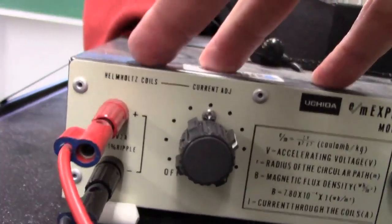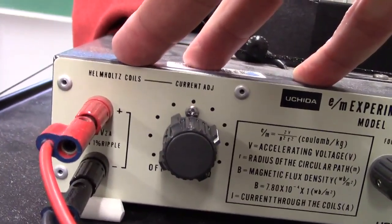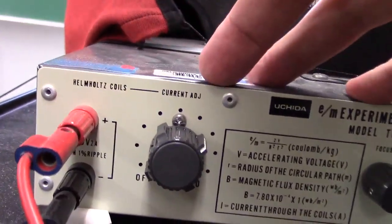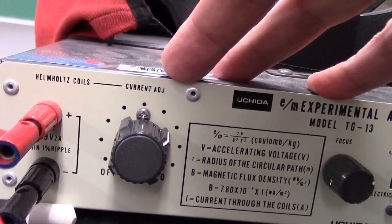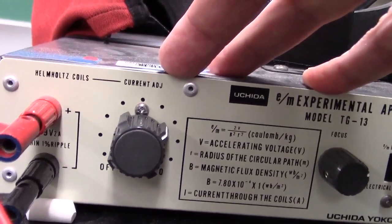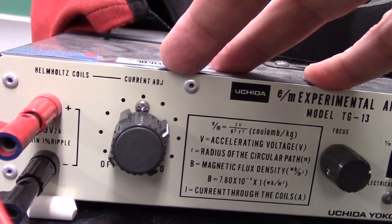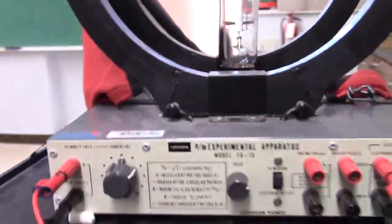On the other side of this apparatus, inputs for Helmholtz coils. I already talked a bit about that. And current adjust. That adjusts the electric current in those coils, which then can adjust the magnetic field.